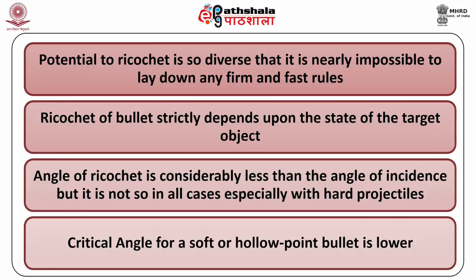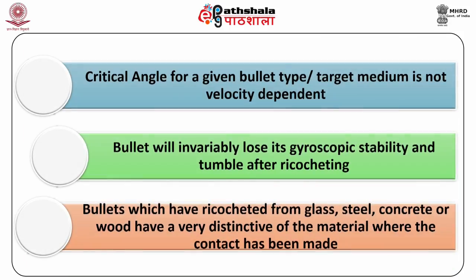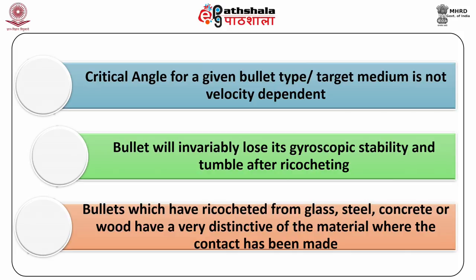Jacketed, high-velocity projectiles penetrating a frangible material such as stone or concrete behave differently. The critical angle for a soft or hollow point bullet is lower. For an equivalent fully jacketed bullet, the collapsing hollow point tends to increase the incident angle, thus increasing the propensity for ricochet. The critical angle for a given bullet type and target medium is not velocity dependent. The bullet will invariably lose its gyroscopic stability and tumble after ricocheting. The tumbling gives rise to a distinctive whining or whirring noise as the tumbling bullet passes through the air.